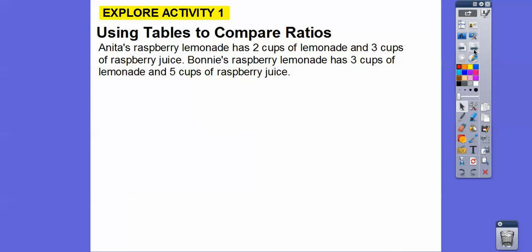I'm at school and they're remodeling, so you might hear some construction workers in the background. Here we're going to use tables to compare ratios. Anita's raspberry lemonade has two cups of lemonade and three cups of raspberry juice, so the rate is two to three.